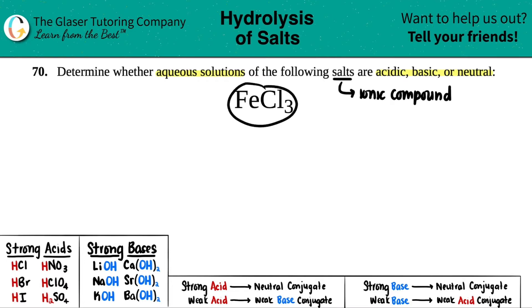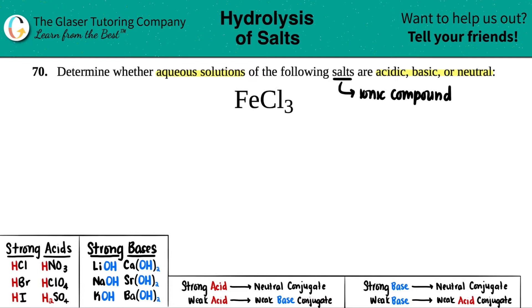What we're going to do, just like we did way early in gen chem, is break these up into their two ions. In FeCl₃ there are only two elements — iron and chlorine — so the split is going to be right down the middle.